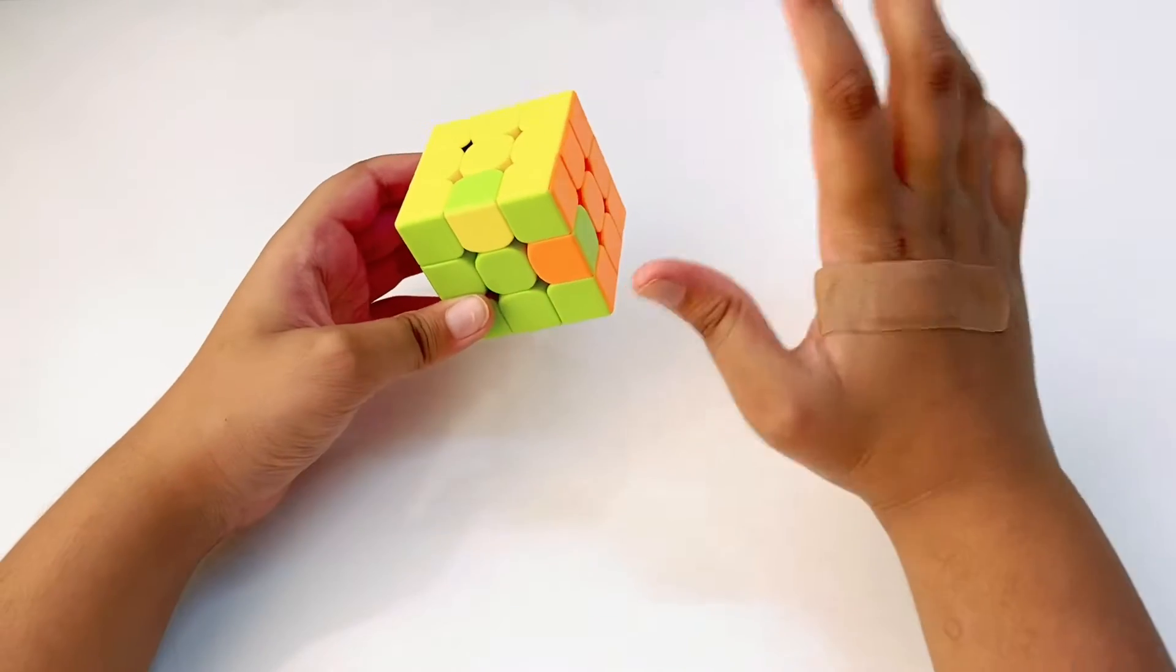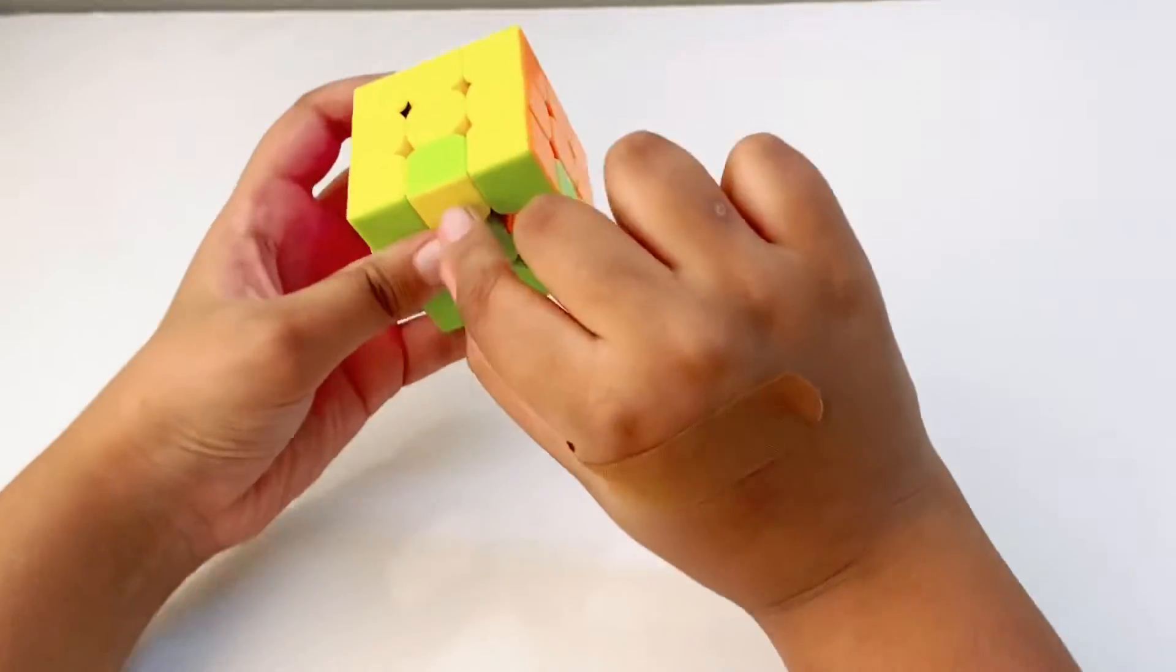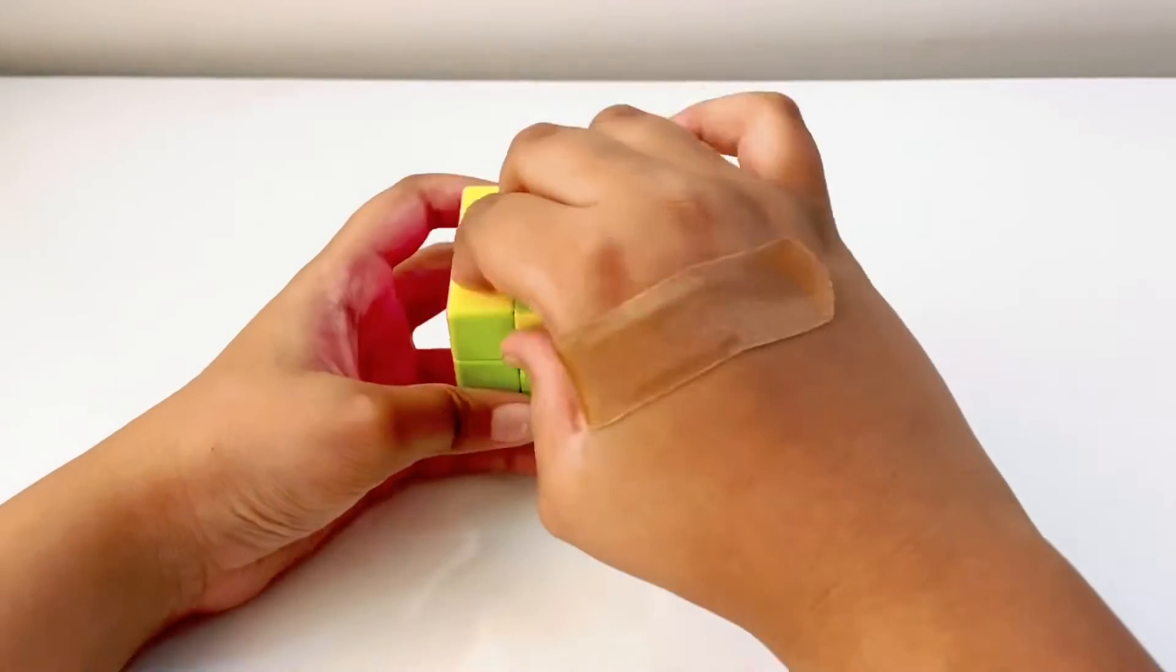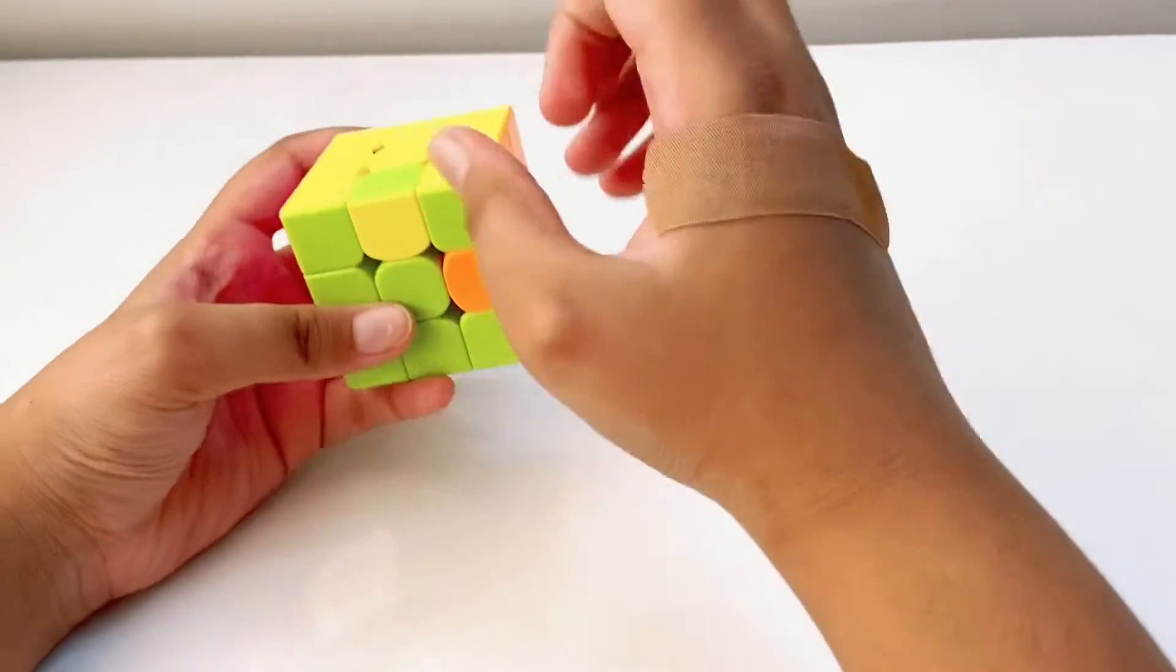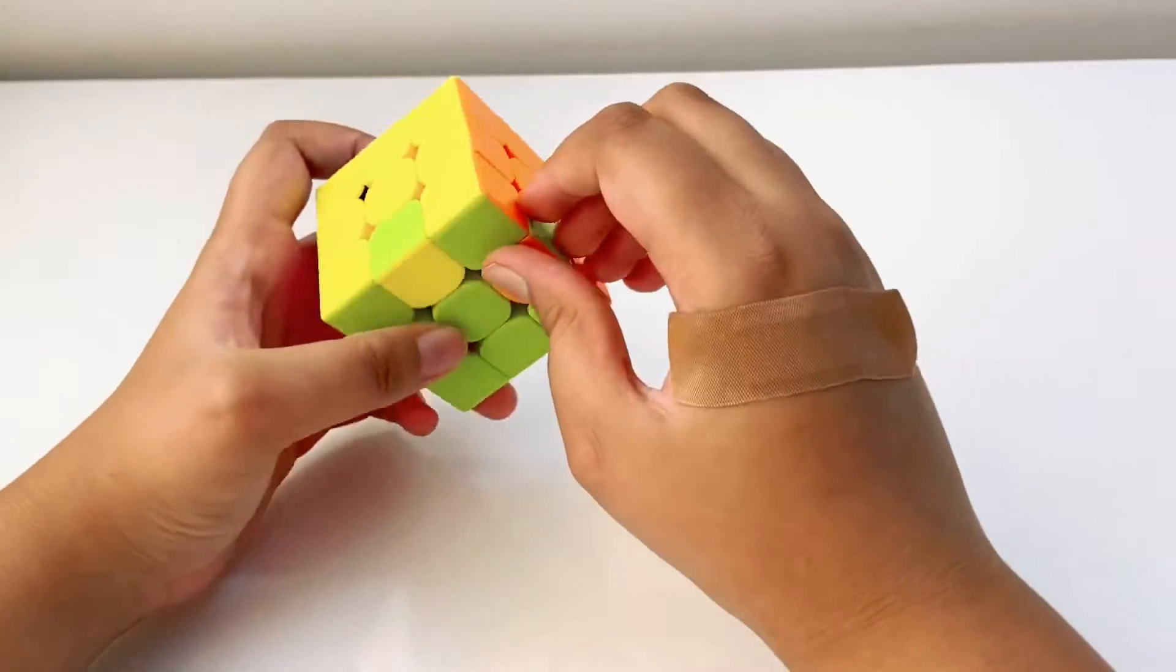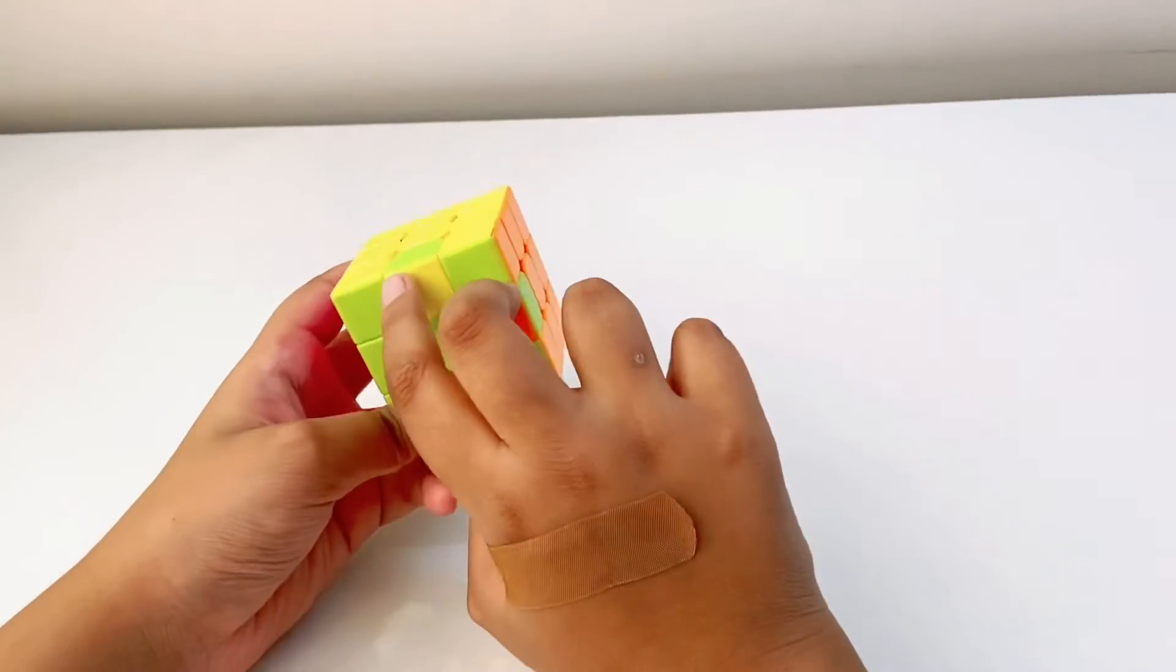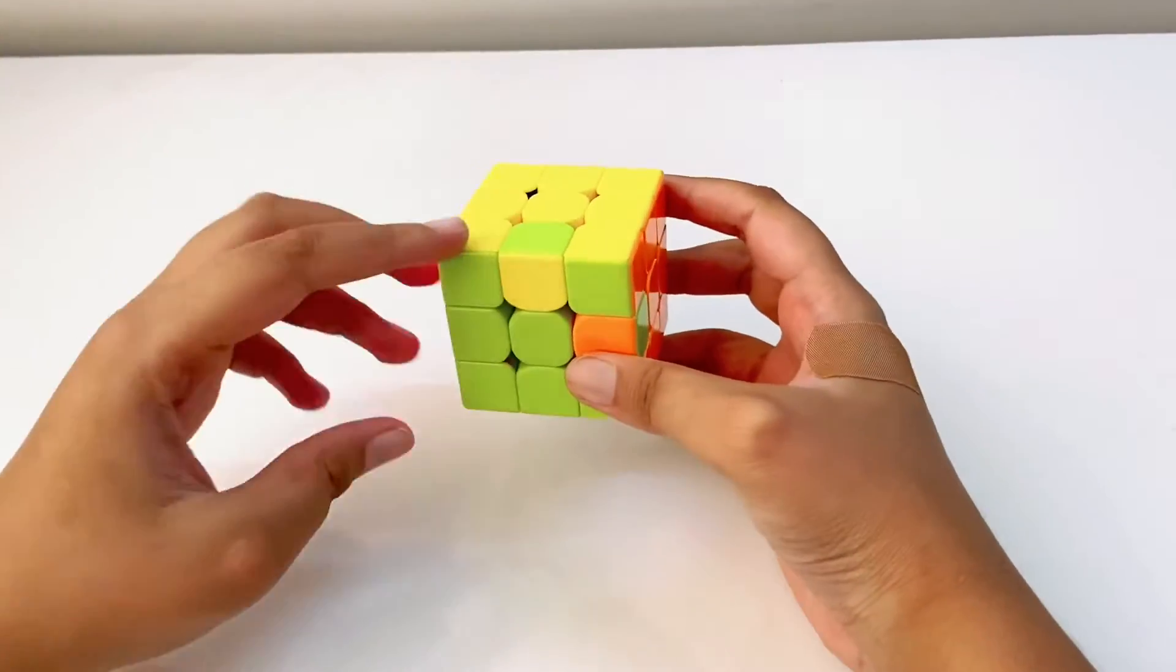But before solving, let me tell you something. As you can see the case, this edge is on its correct place but the only thing is it is oriented wrong, and so with this edge. See, the whole other cube, everything is solved except for these two. Okay, so now let's quickly solve it.